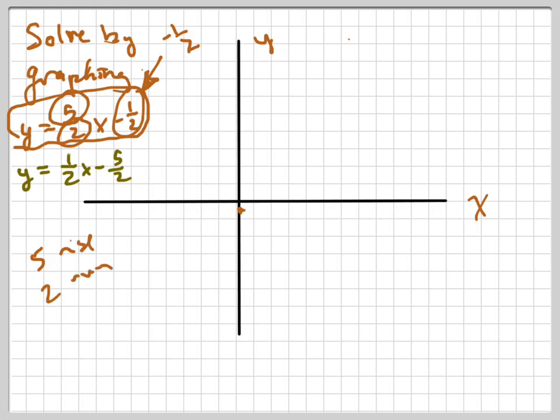So when I go up 5, so I'm starting at 1 half. I'm going up 5, 1, 2, 3, 4, 5. So I'm at 4 and a half. And I'm going over 2, 1, 2. That's the point right there. I can even label that point if I wanted to. 2, 4 and a half.